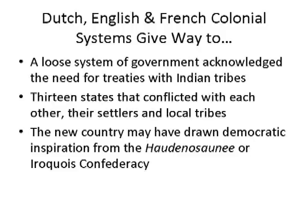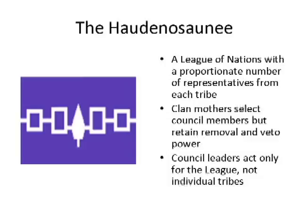One of the inspirations our founding fathers drew from — and I think there is some truth in it — was the Haudenosaunee, or the Iroquois Confederacy living in New York. The Haudenosaunee was a confederation of five different Indian tribes that were ethnically and culturally related: the Oneida, the Cayuga, the Seneca, the Mohawk, and the Onondaga. By the early 18th century, it included the Tuscarora tribe as well. Collectively, they were known as the League of Nations.